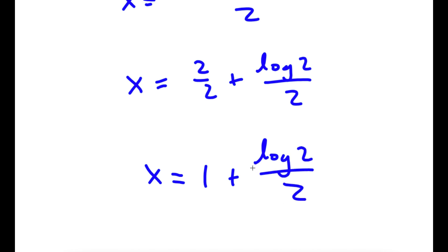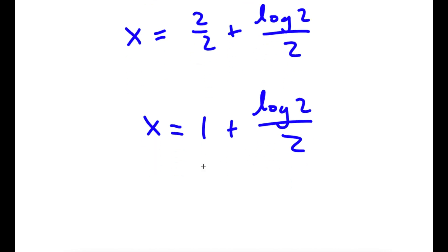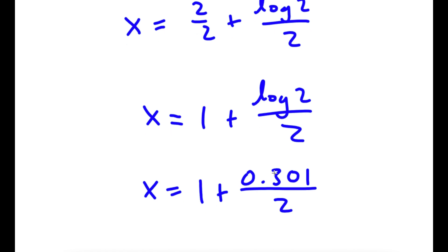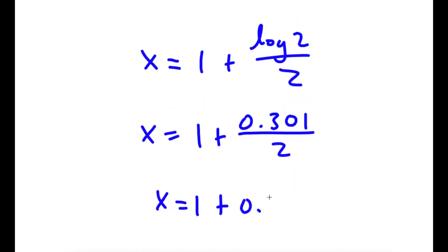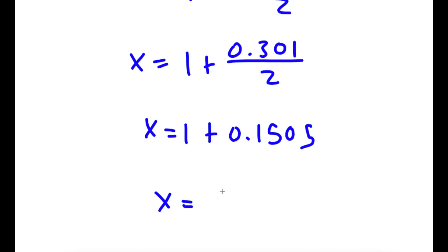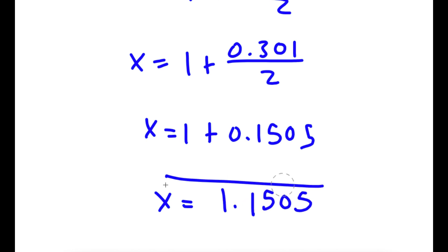Now we need to find the exact value of log 2, which we can use a calculator for. Using a calculator, log 2 is 0.301, and I have that divided by 2. So this is the same thing as 1 plus 0.1505, which gives 1.1505. So this is my answer.